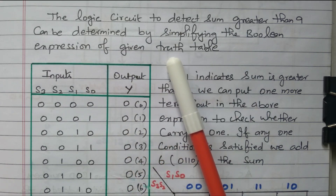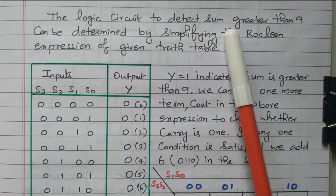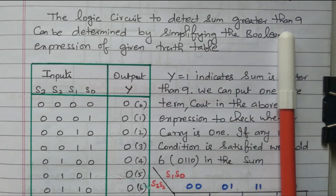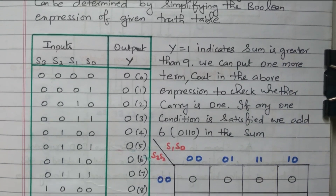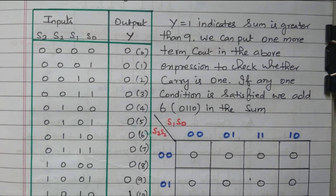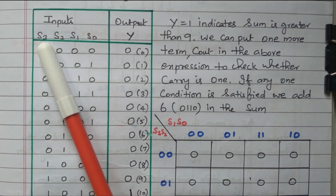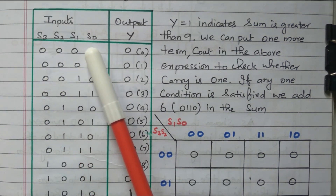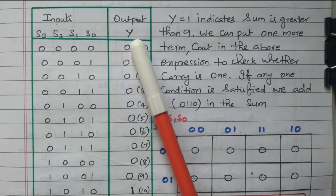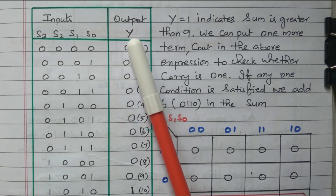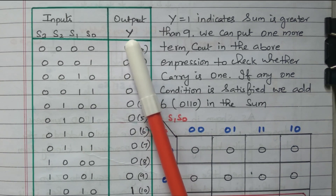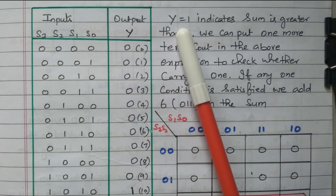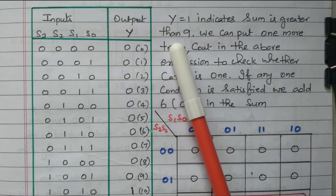By using this truth table, we can frame the logical expression that can be implemented with logic gates so that we can detect whether the sum is greater than nine. In this truth table, the input is the output of the BCD adder: S3, S2, S1, S0. The output is Y. This Y indicates whether the sum is greater than nine or less than nine. Y equal to one means the sum is greater than nine.